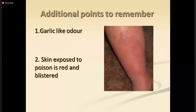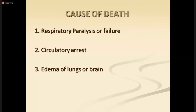For nicotinic actions, the mnemonic MATCH: M = Muscle weakness and fasciculations, A = Adrenal medulla increased activity, T = Tachycardia, C = Cramps in the muscle, H = Hypertension. The cause of death is mainly respiratory paralysis or failure, or circulatory arrest leading to pulmonary edema or brain edema.